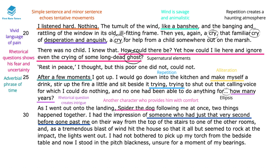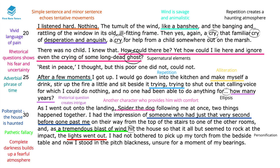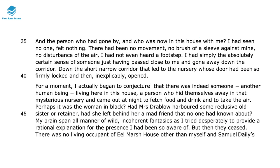We learn that something passes him — again tying back to the supernatural element, the ghost: 'someone who had just that very second gone past me.' This seems almost like a poltergeist; the house is haunted. This is coupled with 'a tremendous blast of wind,' and the pathetic fallacy heightens the sense of danger. The personification 'hit' shows just how forceful the wind is, and the lights finally go out — he is encased in complete darkness, creating a really sinister atmosphere. The description 'pitch blackness' further emphasises this dark atmosphere, adding to our own sense of foreboding as readers.